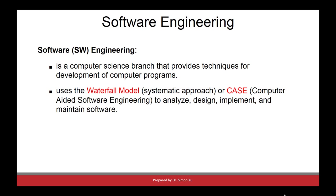The purpose of software engineering research is to find better methods, methodologies, and tools to help us develop high-quality software products. For example, the famous waterfall model is used to help us systematically develop software, which includes a few phases. The CASE tool — which stands for Computer Aided Software Engineering — is a technique for using computers to help one or more phases of the software development life cycle.